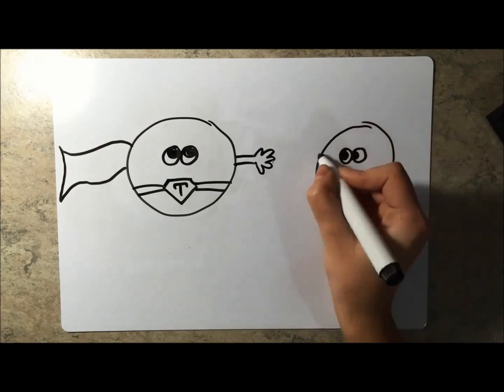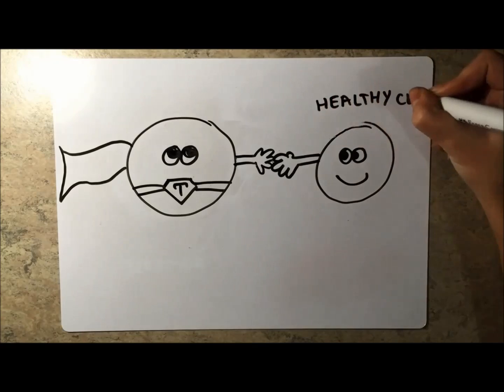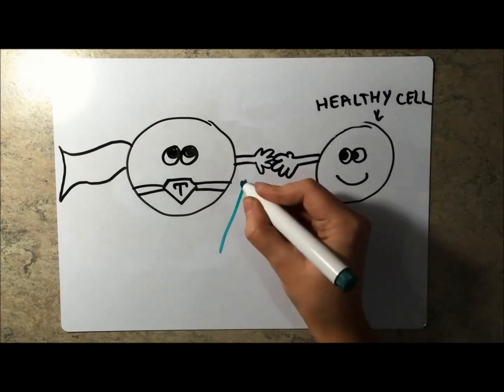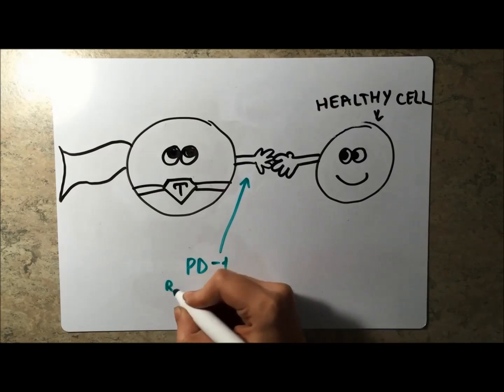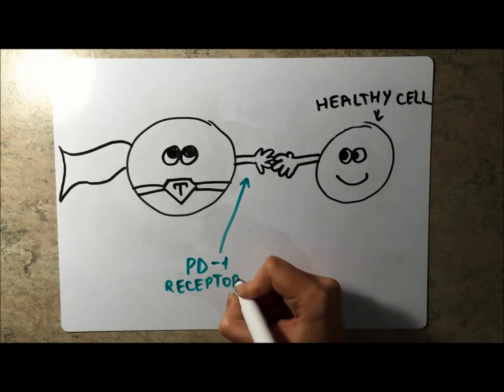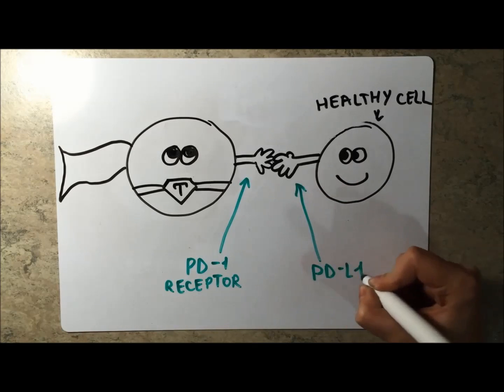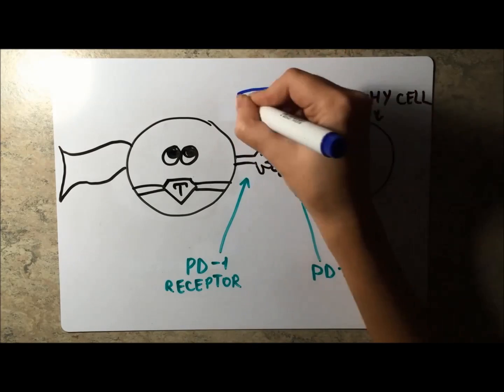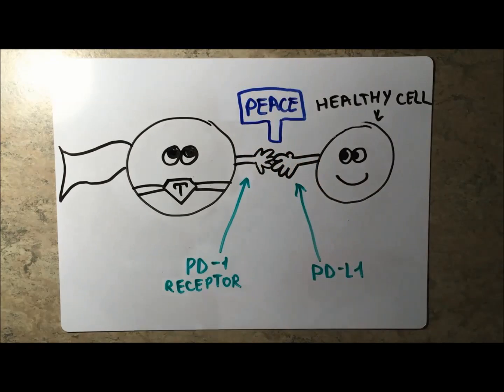So what exactly happens when a T cell binds to a healthy cell? One specific receptor T cells have is PD-1, programmed cell death 1. PD-1 receptors recognize their partner PD-L1 proteins located on healthy cells. When PD-1 binds with PD-L1, T cells do not attack the healthy cell.